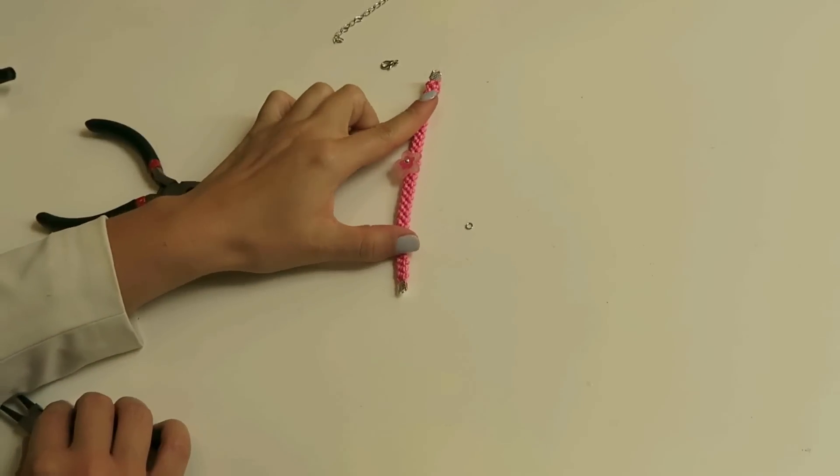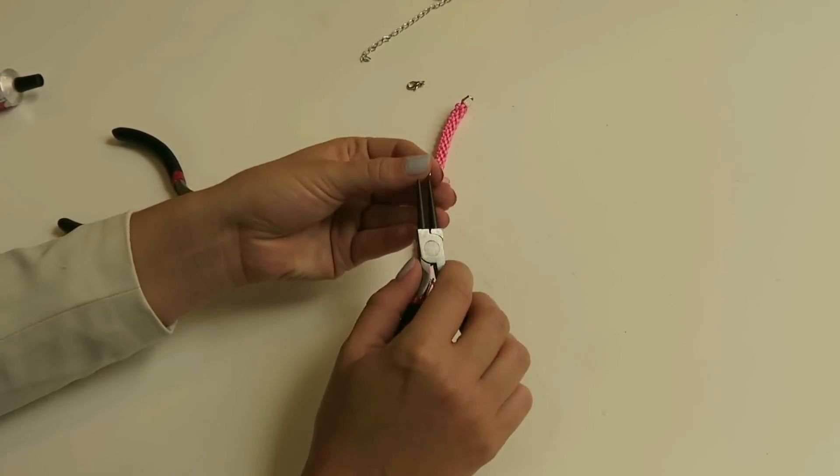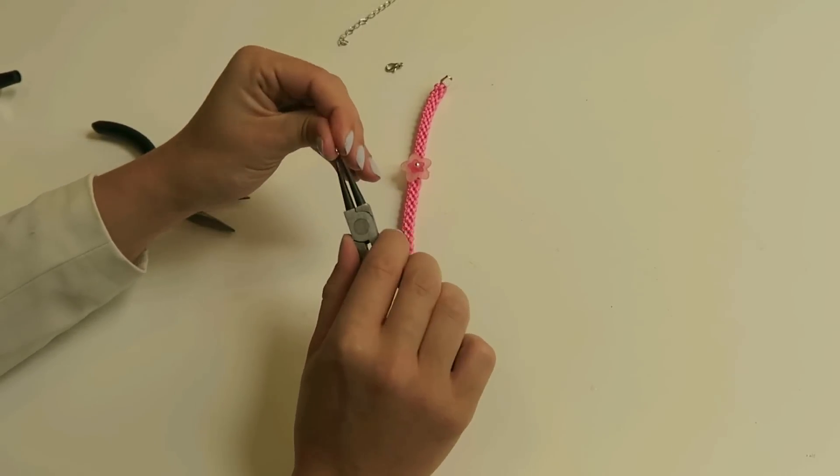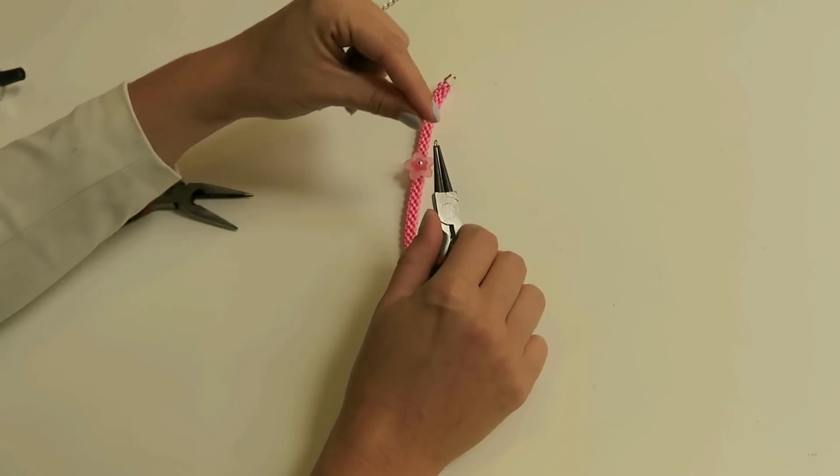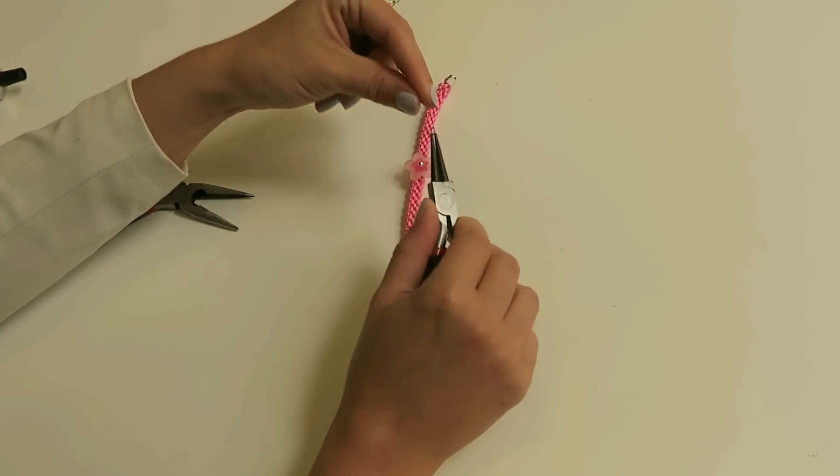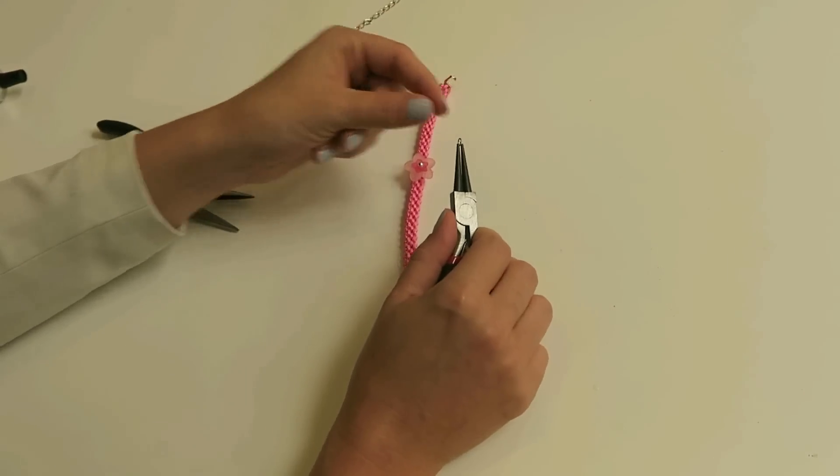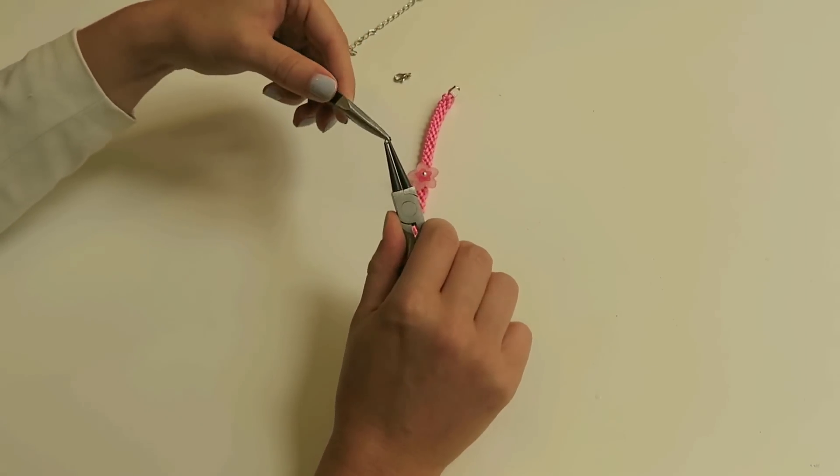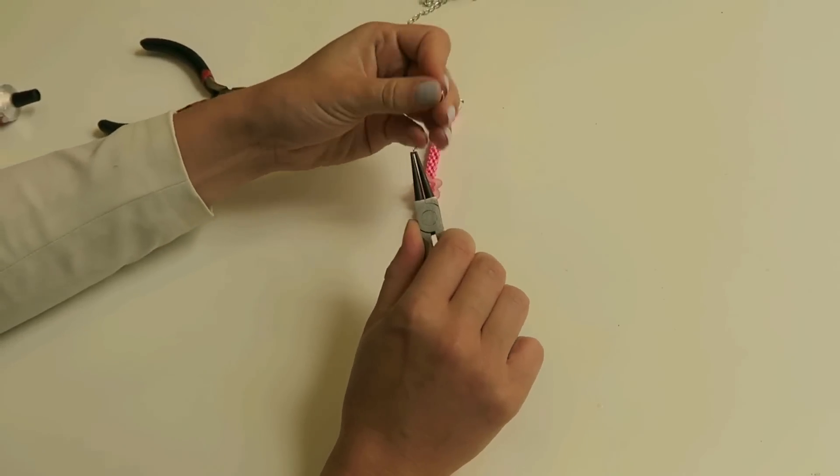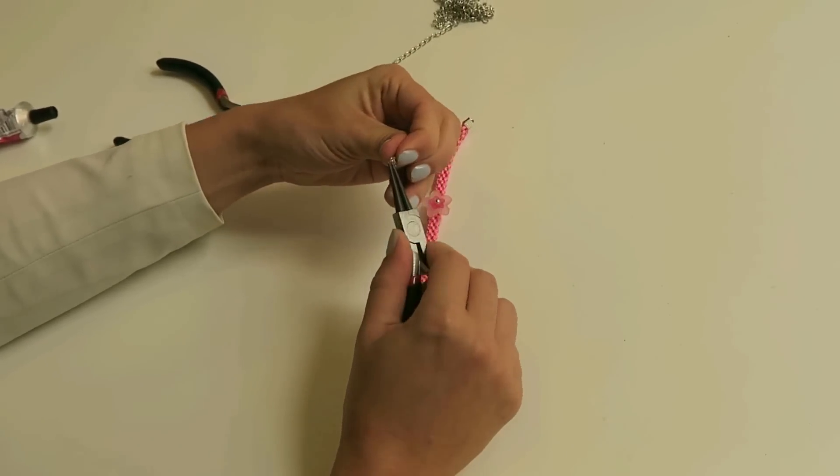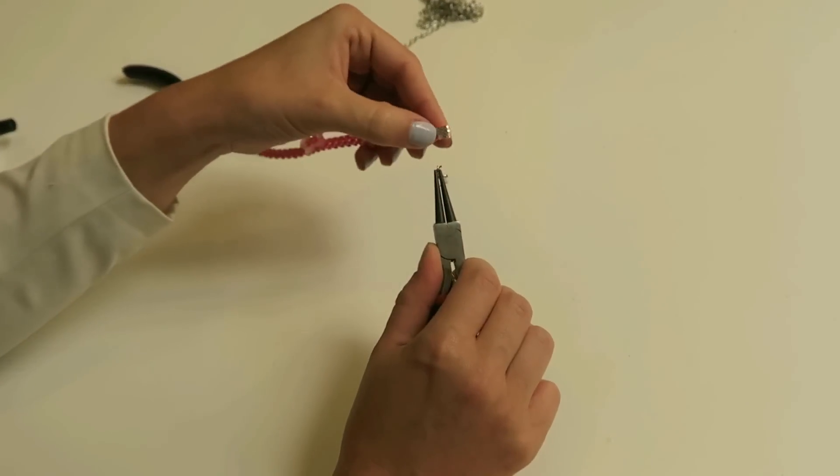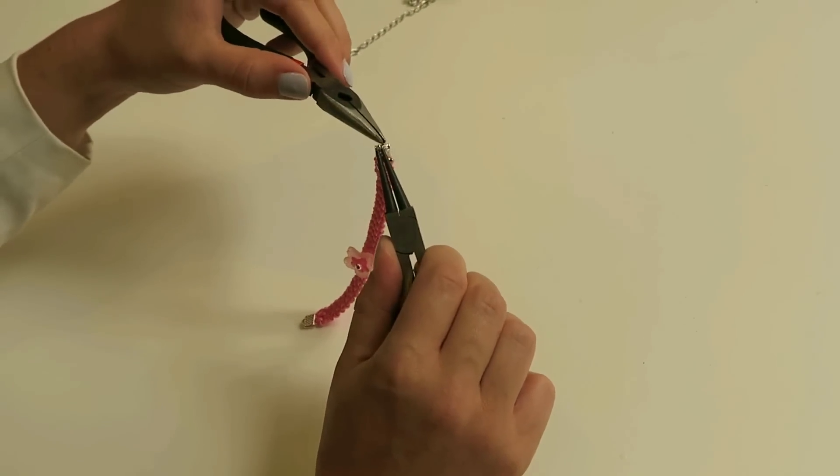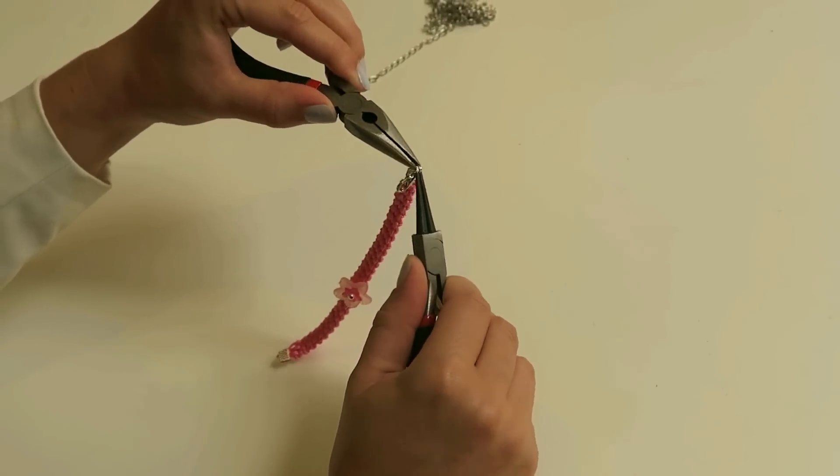So we put on both cord ends. Now we're gonna just put on the clasp. You're gonna take a 4mm jump ring and open it. Make sure the rings you always open them like this and not like this, because then you'll lose the form and you cannot close them properly anymore. So just open it a little bit, put them through your lobster clasp, put it through the eye on your cord end, and then close it.